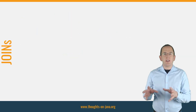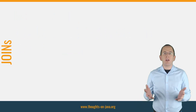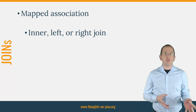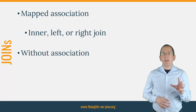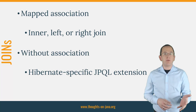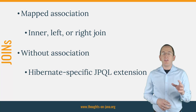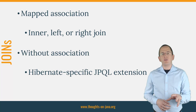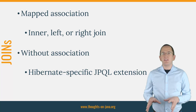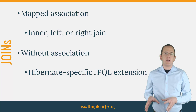JPQL and the Criteria API require a mapped association between two entities to define an inner, left, or right join. And as I showed in a previous article, Hibernate offers a proprietary extension to JPQL that enables you to create SQL-like join clauses. Unfortunately, there isn't something similar that you could use with the Criteria API.